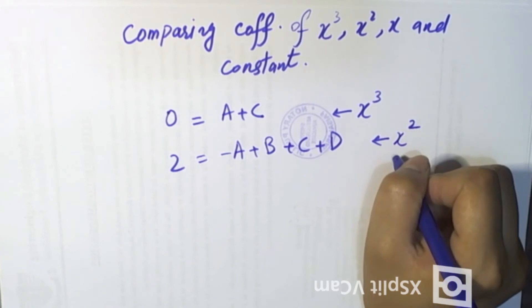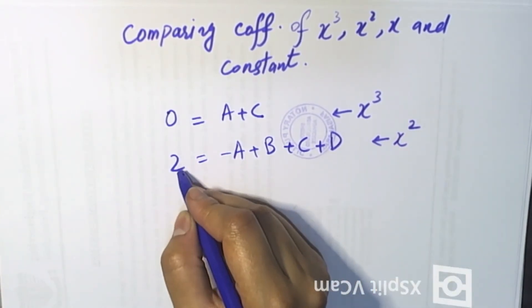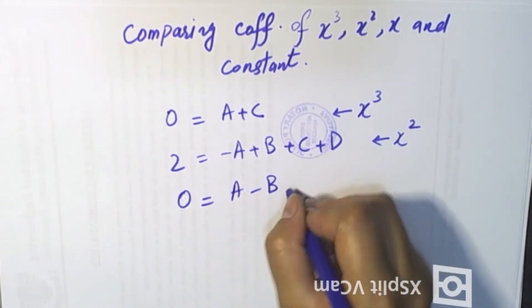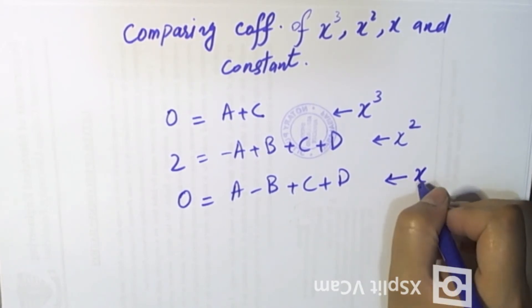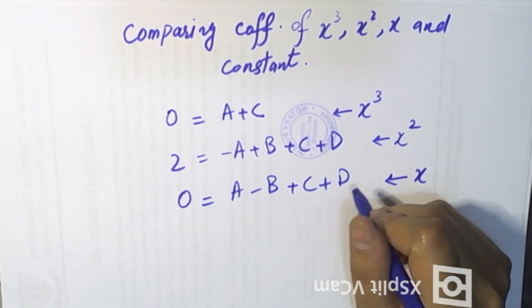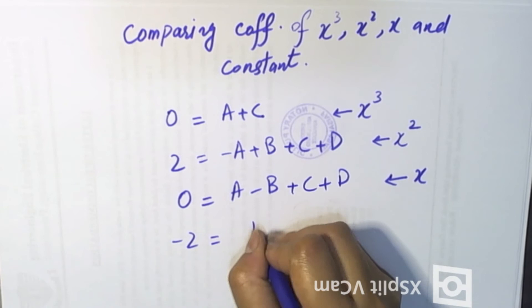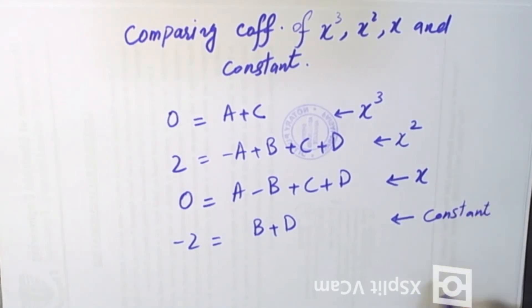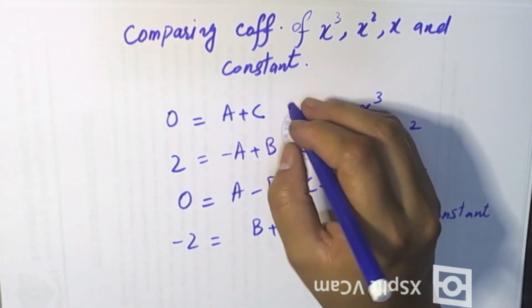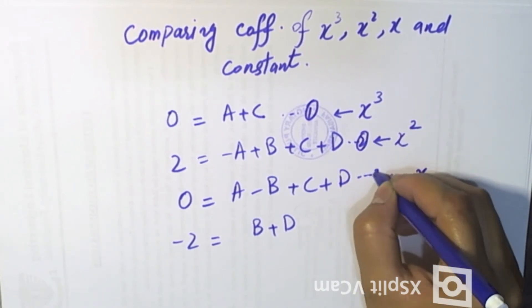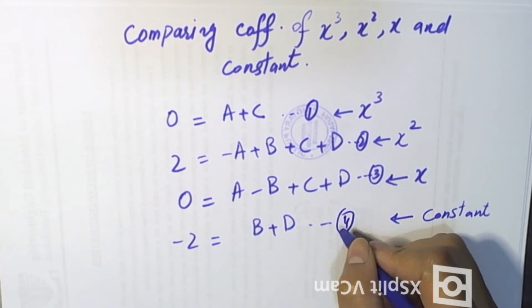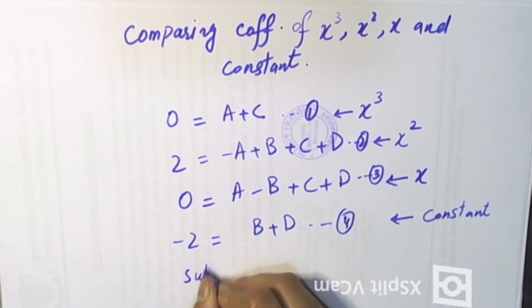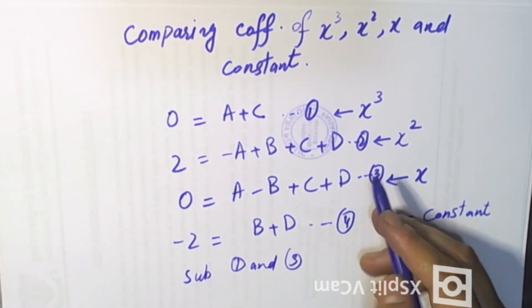X square coefficient compare: left side is 2. Next x compare: left side 0, right side A minus B plus C plus D — x coefficient compare. Next is constant coefficient compare: B plus D. So we can write equation number 1 through 4. From these four equations we can solve and find A, B, C, D values. We subtract equation 1 and equation 3.